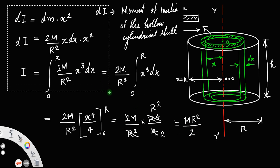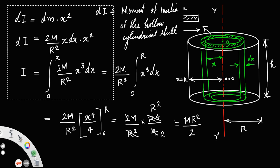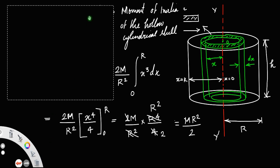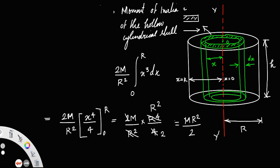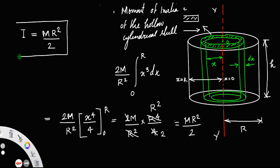Therefore, the moment of inertia of the solid cylinder about its axis is I = mr²/2. This is the same as the moment of inertia of a circular disk.